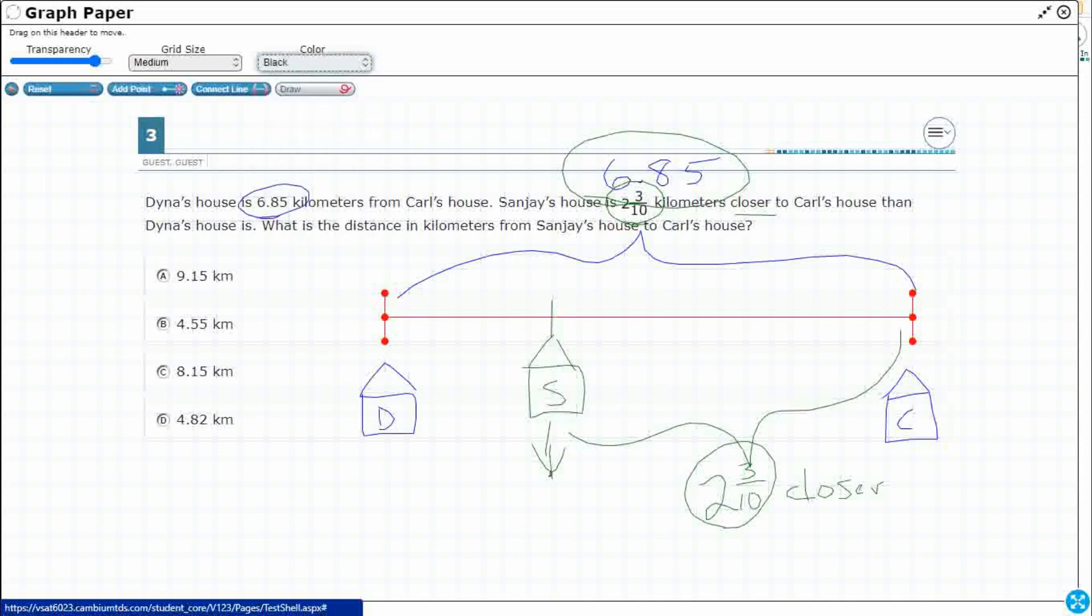So really, if we want to just make it into like a strip diagram, right, we're just comparing our 6 and 85 hundredths and we're comparing our 2 and 3 tenths.